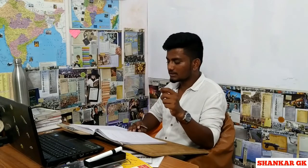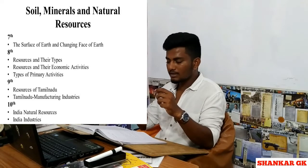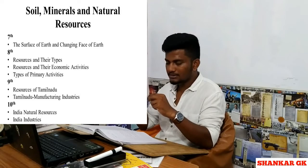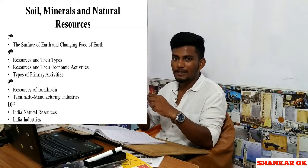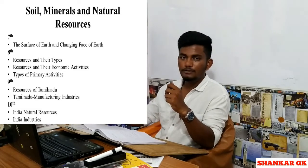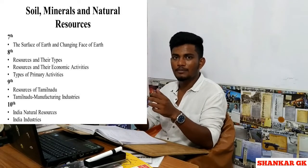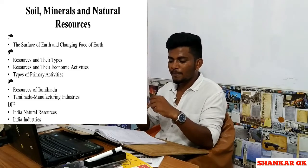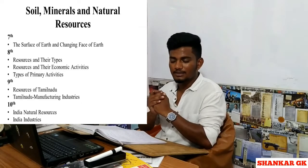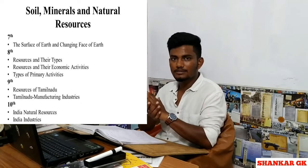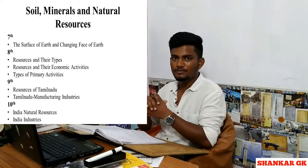The next part is soil, minerals, and natural resources. The 7th book covers the surface of earth and changing phase of earth. The 8th book covers resources and economic activities, types of primary activities — primary, secondary, and tertiary. The 9th book is resources of Tamil Nadu. The 10th book covers India Natural Resources and India Industries.